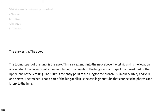The hilum is the entry point of the lung for the bronchi, pulmonary artery and vein, and nerves. The trachea is not a part of the lung at all; it is the cartilaginous tube that connects the pharynx and larynx to the lung.